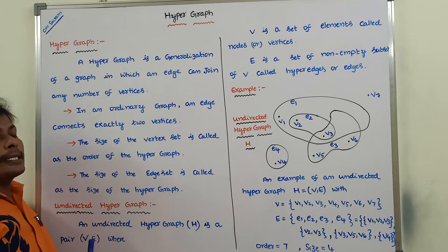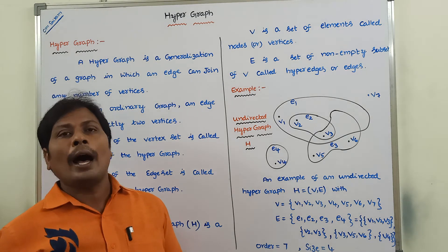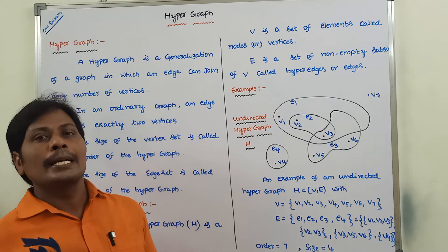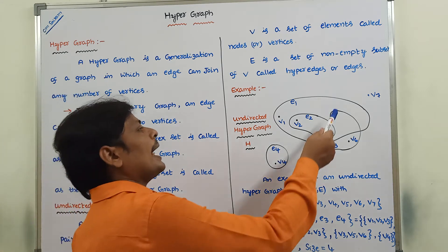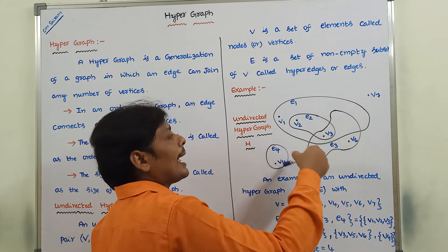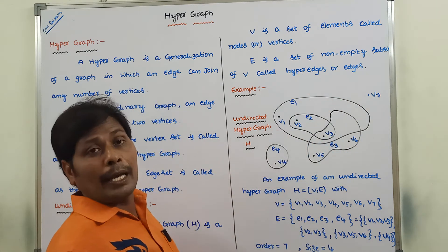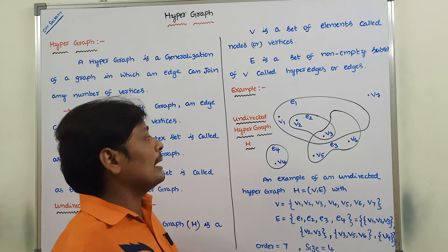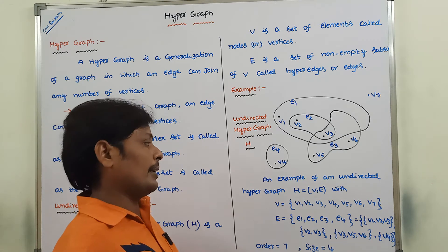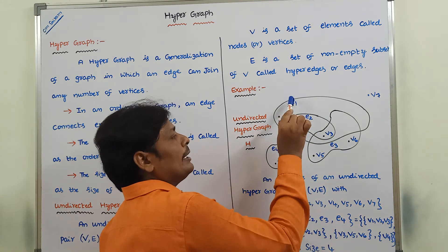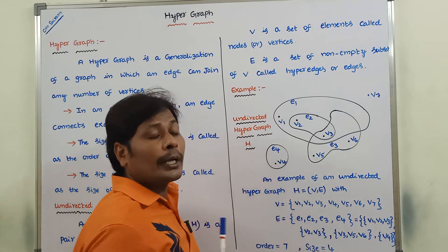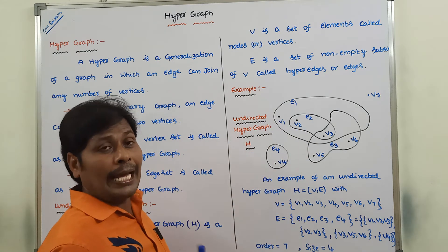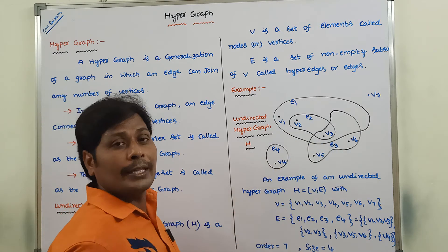Next, what is the size of the hypergraph? The size means the number of edges or hyper-edges in the hypergraph. In this undirected hypergraph, there are four edges: E1, E2, E3, and E4. Hence, the size of this hypergraph is equal to 4.